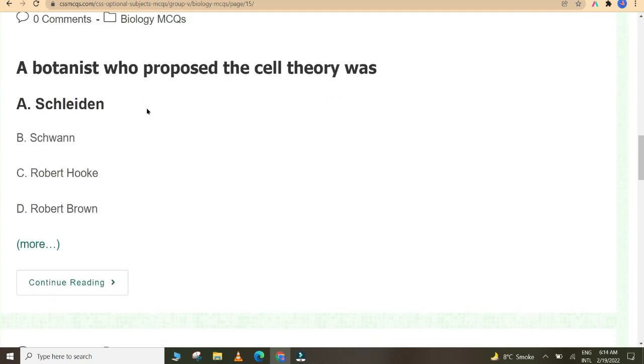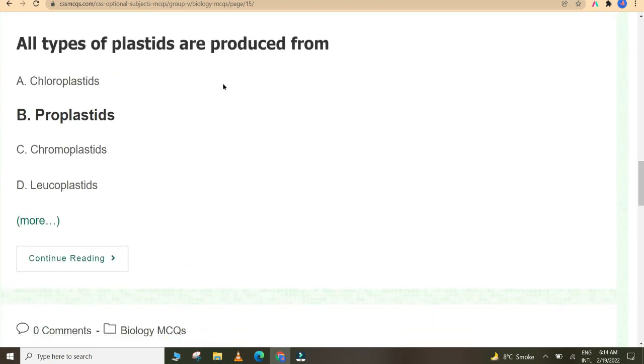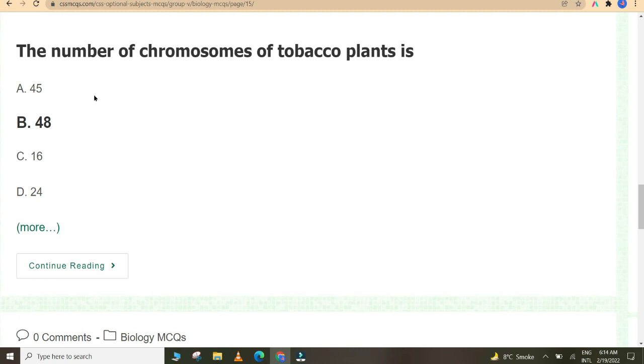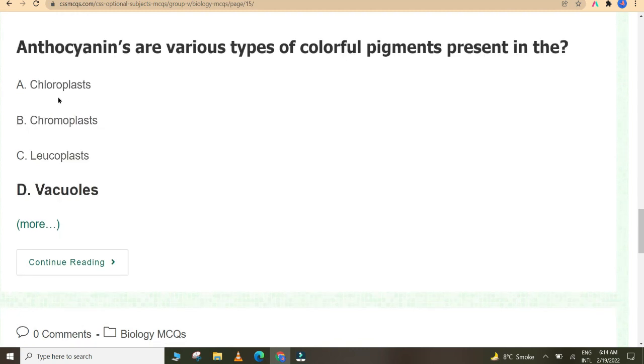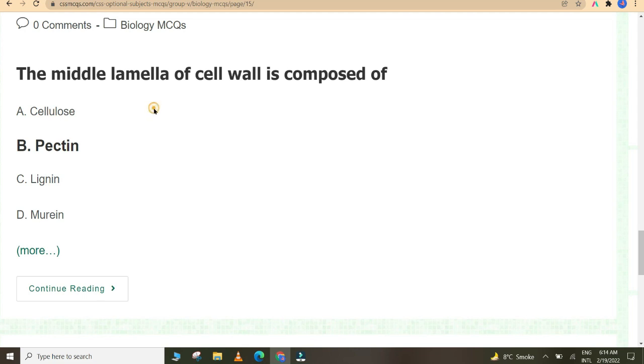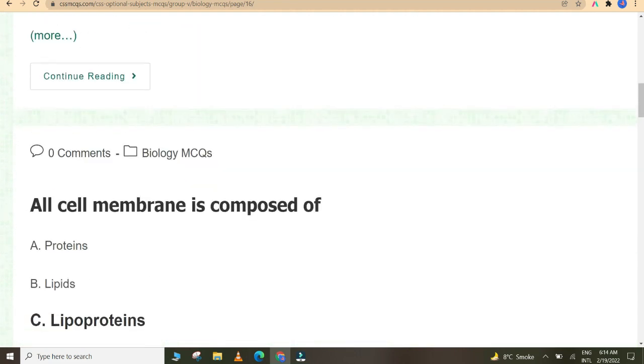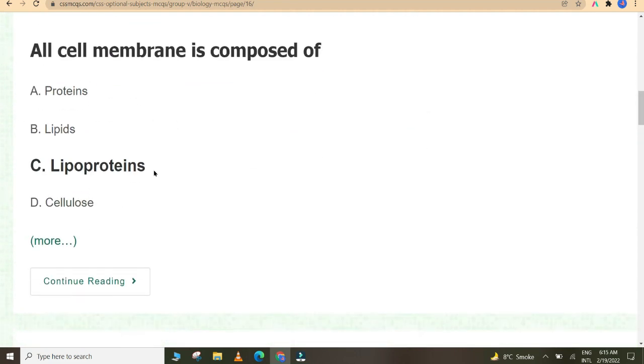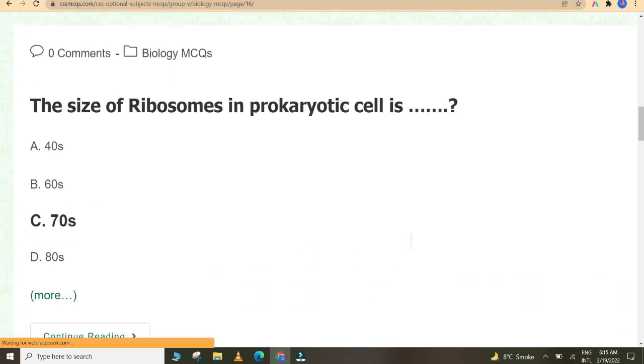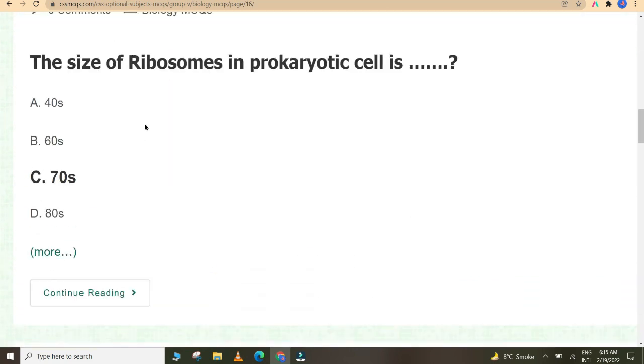A botanist who proposed the cell theory was Schleiden. All types of plastids are produced from proplastids. The number of chromosomes of tobacco plants is 48. Anthocyanins are various types of colorful pigments present in the vacuoles. The middle lamella of cell wall is composed of pectin. Fatty acid is converted into carbohydrates by glyoxysomes. Cell membrane is composed of lipoproteins.